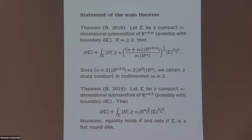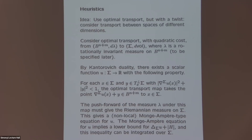Another point worth mentioning is that the terms on the left-hand side are natural to put together because they scale the same way: the boundary measure scales like (n-1)-dimensional volume, and since mean curvature scales like one over length, the integral of mean curvature scales like (n-1)-dimensional volume as well. This is a very natural combination to form, as already recognized by Michael and Simon. Regarding when equality holds: equality holds for any flat disk. If you have an n-dimensional linear subspace, you get equality. And the converse is also true — this is the only way to achieve equality.